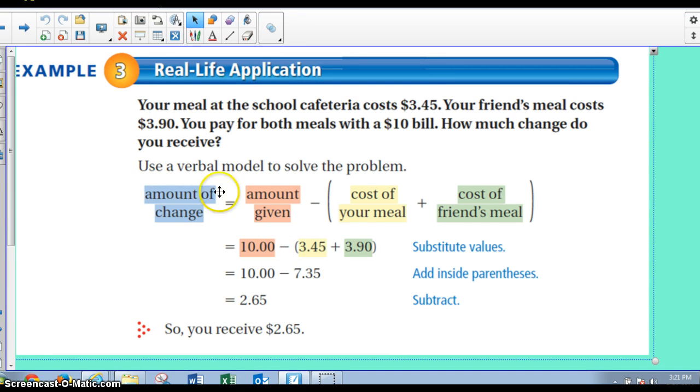What this verbal model helps you with is when any time you have a problem, a word problem, a situation that you have to figure out, okay, what do I need from this story? The words help you. What am I looking for? I'm looking for the amount of change. Well, how am I going to figure that out? Whatever your brain tells you is what you write out in words if it's necessary.